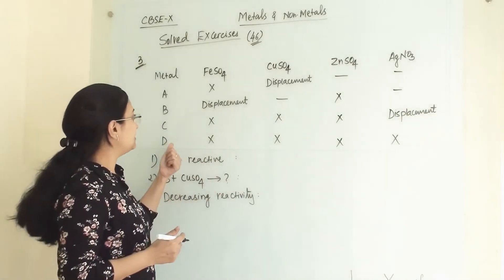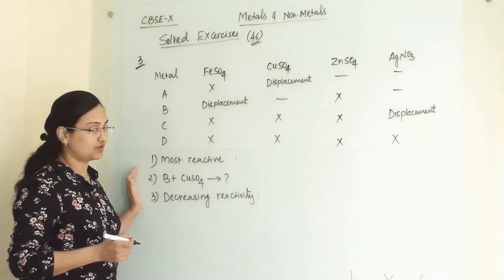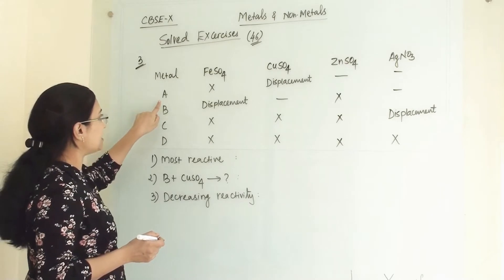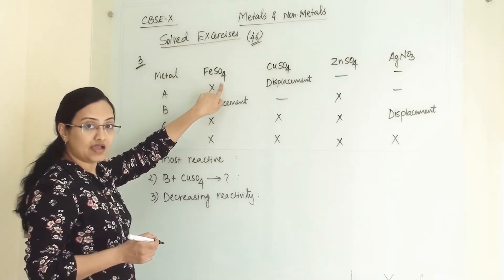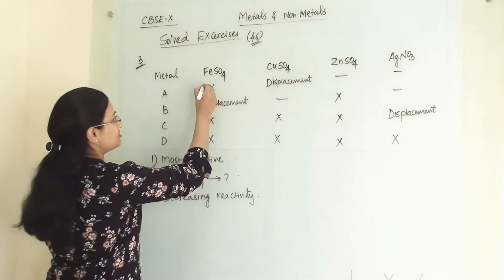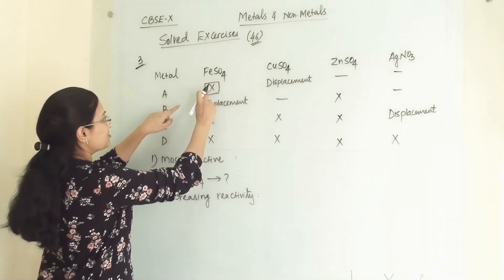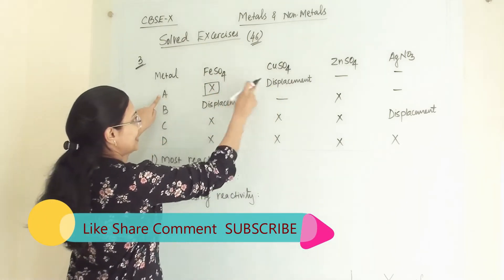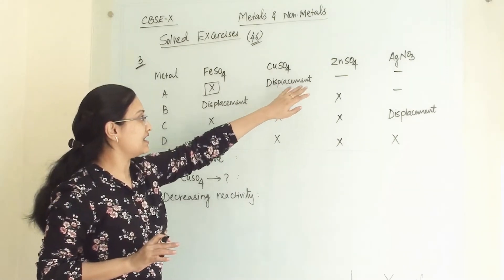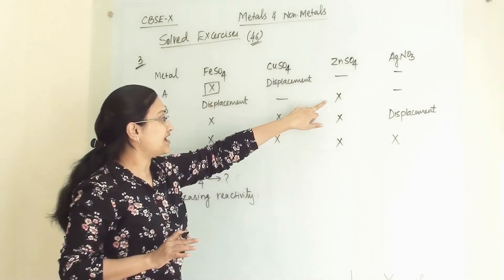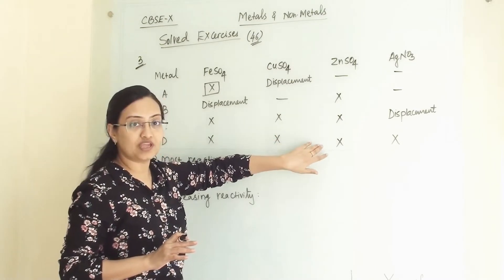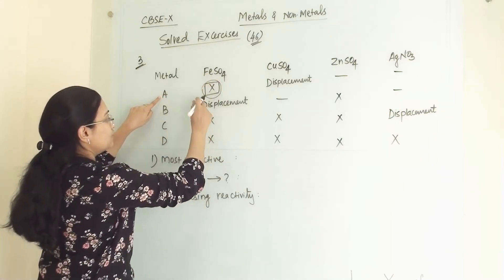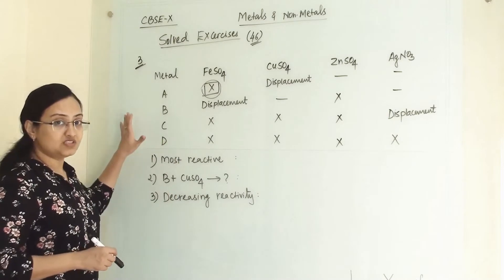In the third question, a table has been given and we have to answer some questions. The metals are A, B, C, and D. When metal A is added to iron sulfate and copper sulfate, the reactions are shown. Where I have marked a cross, there is no reaction — so metal A and FeSO₄ show no reaction.